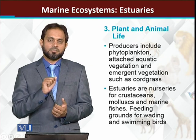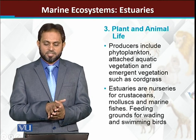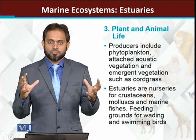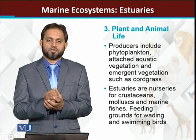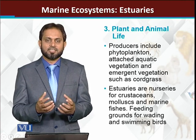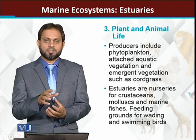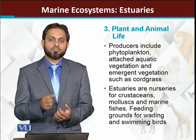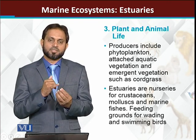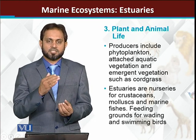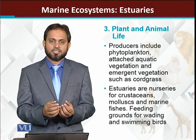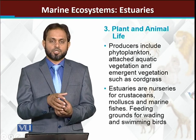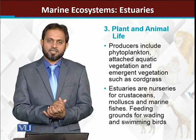Regarding animals, different types of invertebrates are there. Estuaries are also called the nurseries of different types of animals, because estuarine water has the highest diversity in the aquatic ecosystem. There are large numbers of invertebrates — including mollusks, annelids, arthropods, and different types of crustaceans such as crabs and shrimps. Different types of fishes are also present, and birds that feed on fishes are also found in estuarine water.